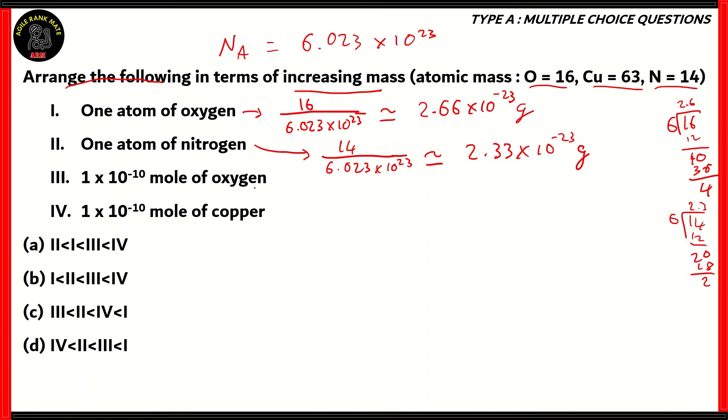What about 10 raised to minus 10 moles of oxygen? In this case we use the molar mass, which is 16, and then multiply that with the number of moles, which in this case is 1 into 10 raised to minus 10. That gives you 16 times 10 raised to minus 10 grams. And the same system goes for copper. It will be equal to 63 times 10 raised to minus 10 grams.